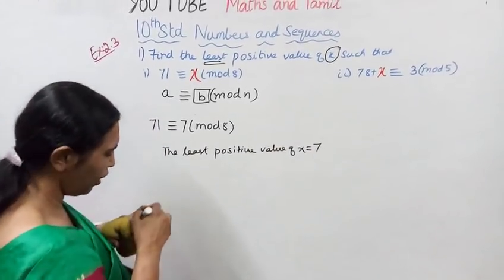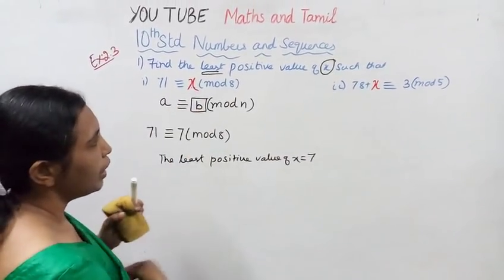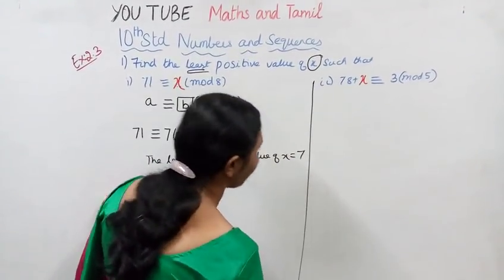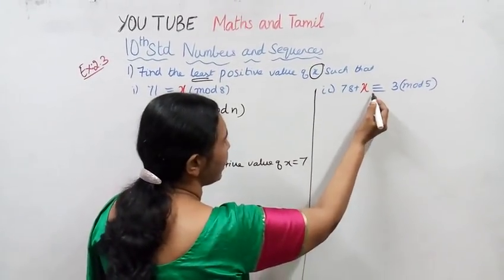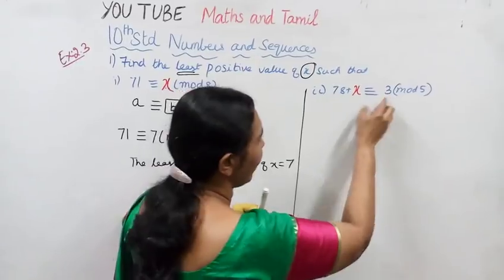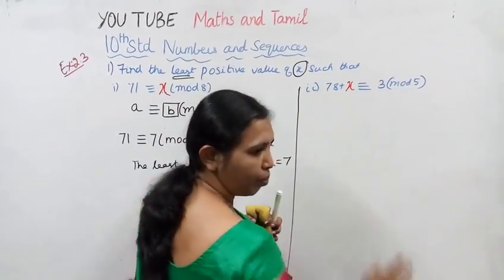The least positive value of x equal to 7. Second sum: 78 plus x equal to 3 mod 5.